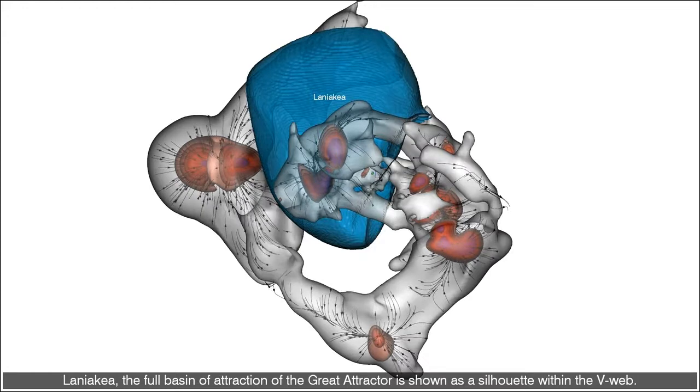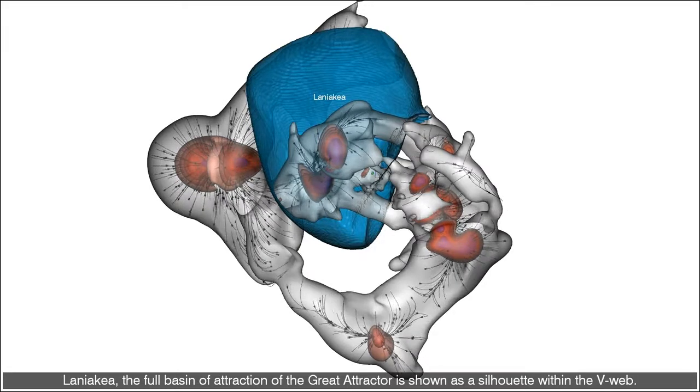Laniakea, the full basin of attraction of the greater attractor, is shown as a silhouette within the V-web.